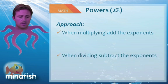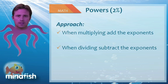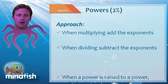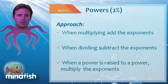When dividing, we want to subtract exponents. x to the seventh divided by x squared would be x to the fifth. And when a power is raised to a power, that's when we multiply. x squared raised to the power of three would be x to the sixth.